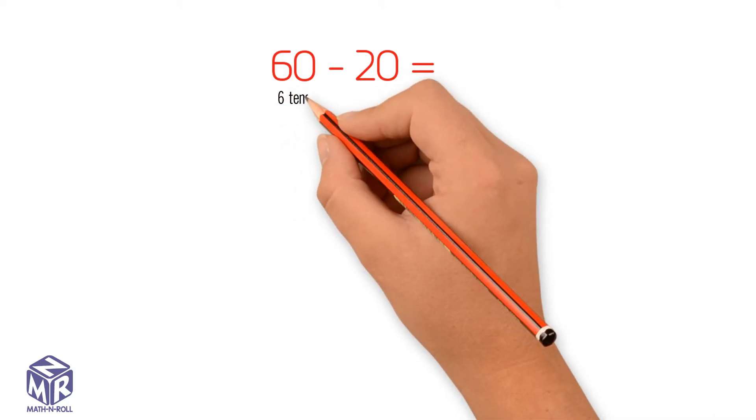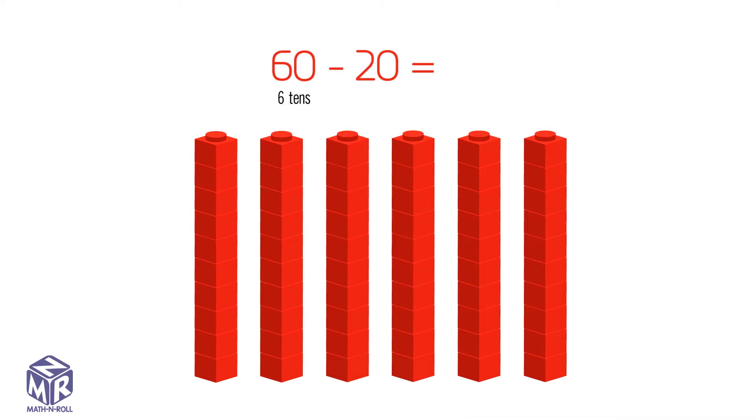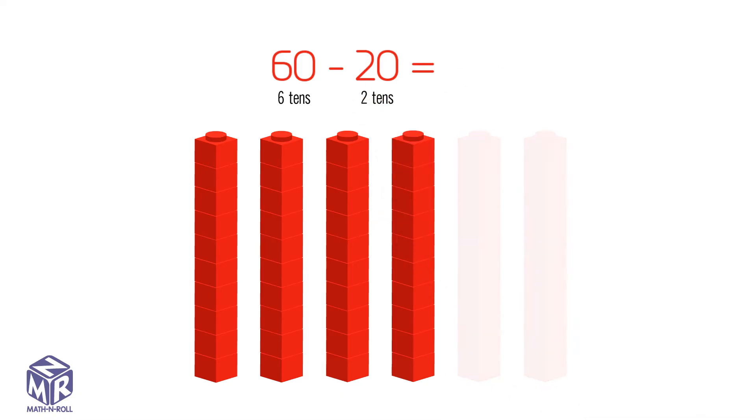How do we subtract 60 minus 20? 60 has 6 tens and 20 has 2 tens. Subtract the tens. We get 4 tens or 40.